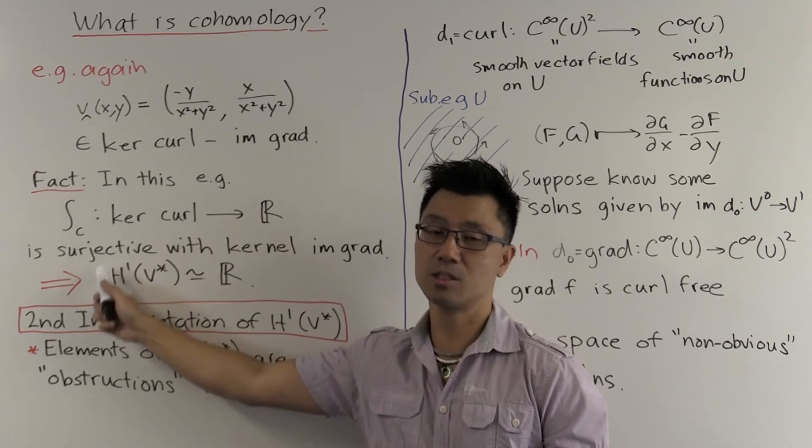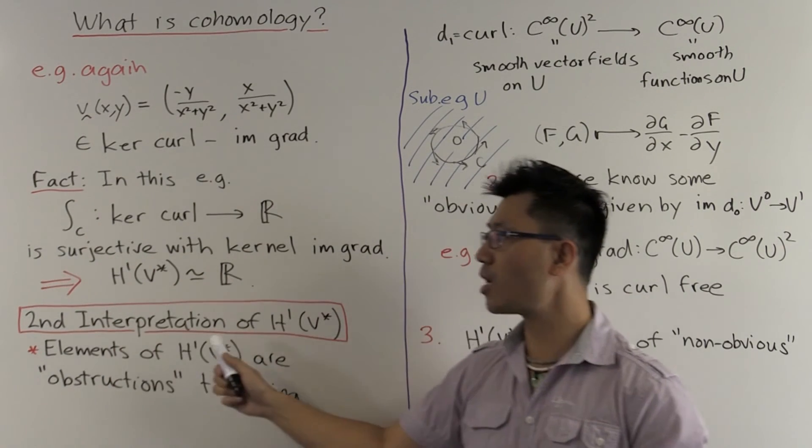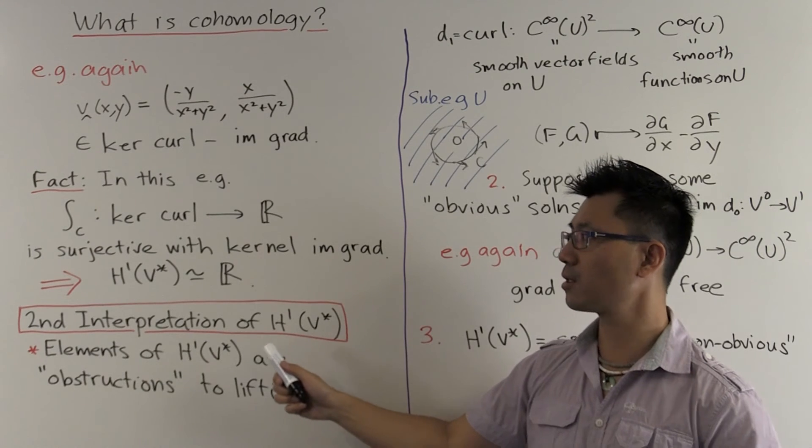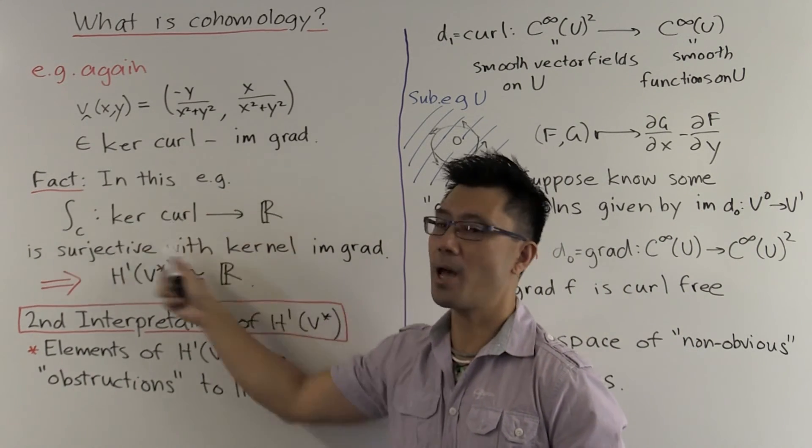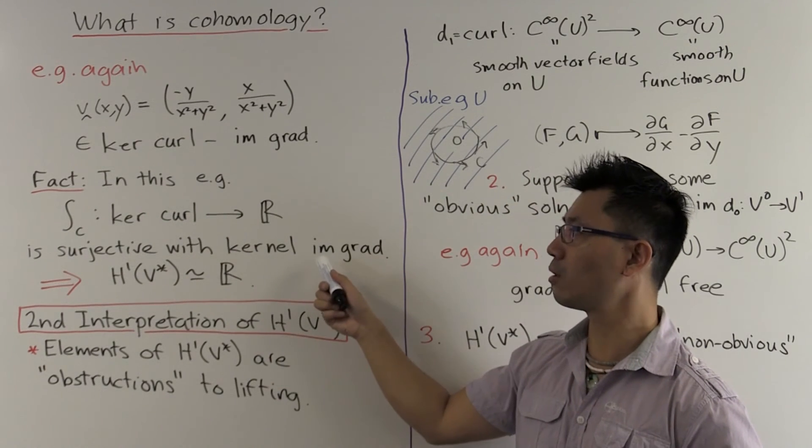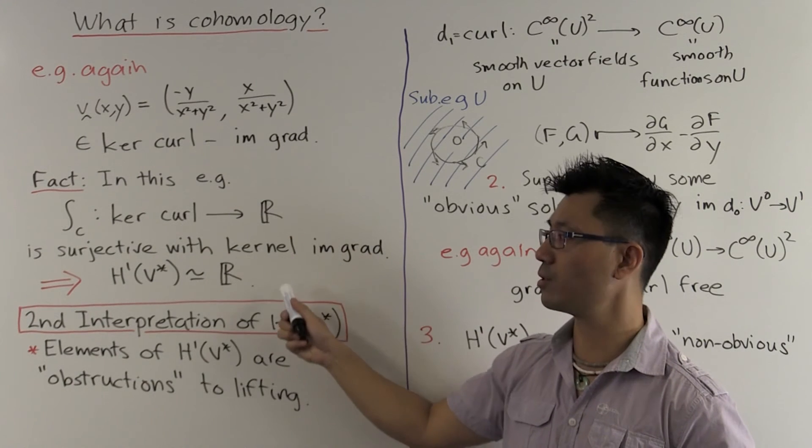So what does that tell us? That gives us a complete description of this first cohomology in this case. The first isomorphism theorem tells you that H1 V star, which is the domain modulo the kernel of this map, is isomorphic to the image, which is all of the reals.